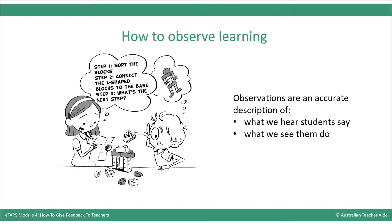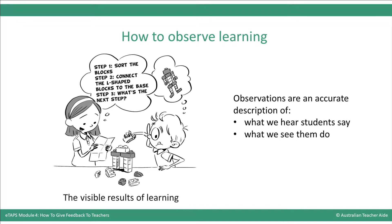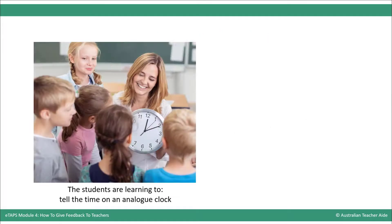Observations are an accurate description of what we hear students say and see them do. This is sometimes referred to as the visible results of learning. This example shows how a TA accurately observes and describes what students say and do. The TA is working with a small group of students who are learning to tell the time on an analogue clock.